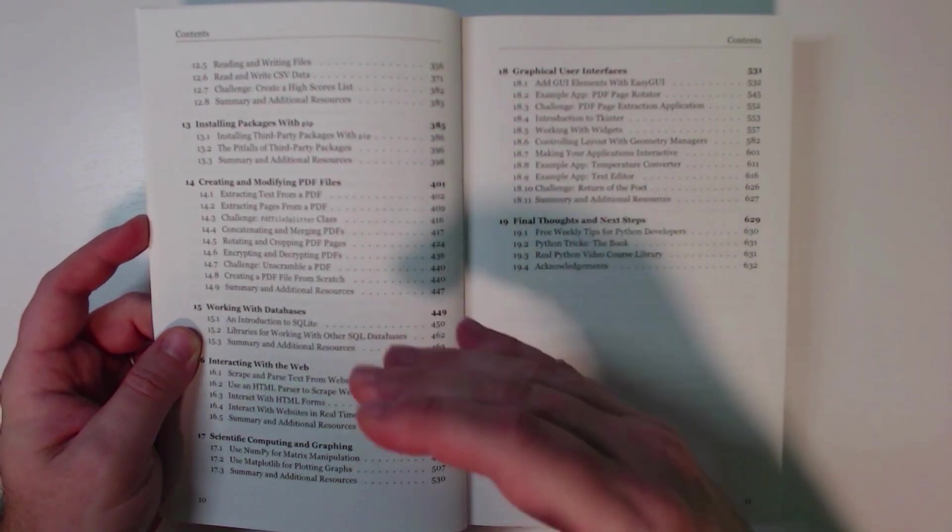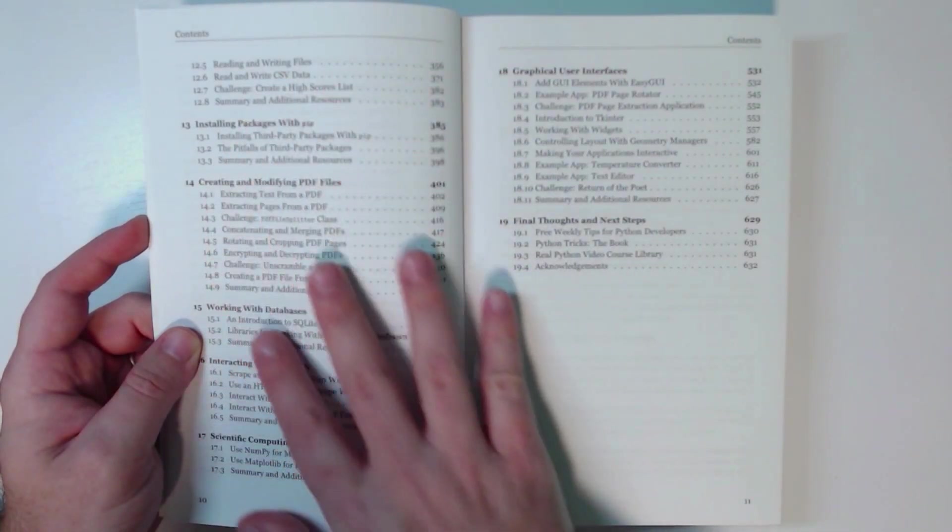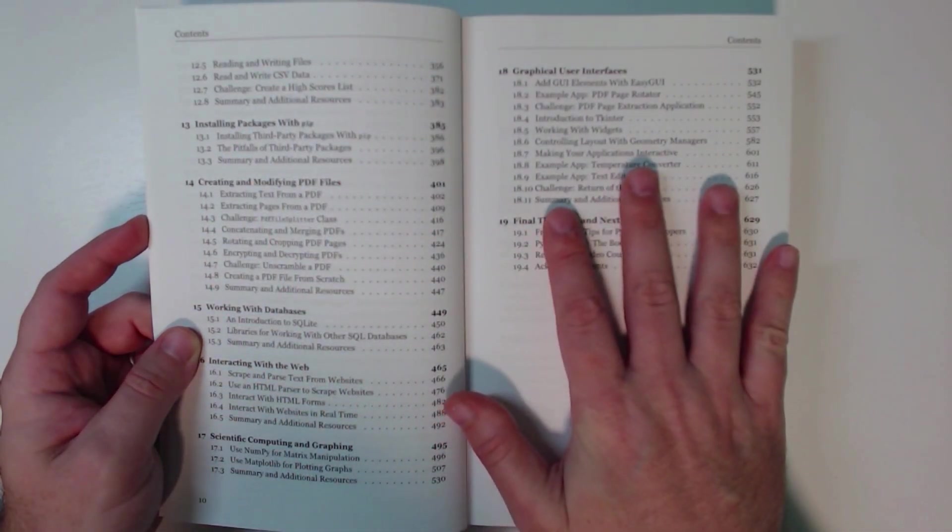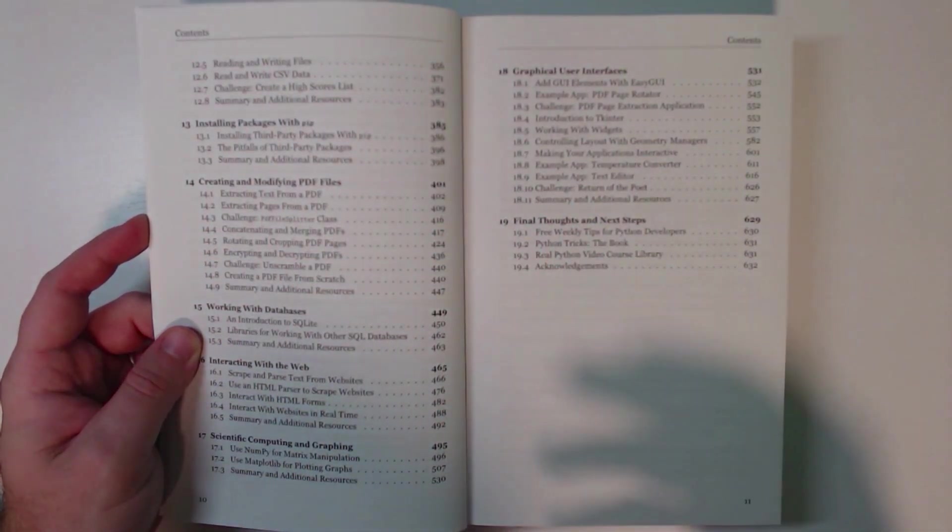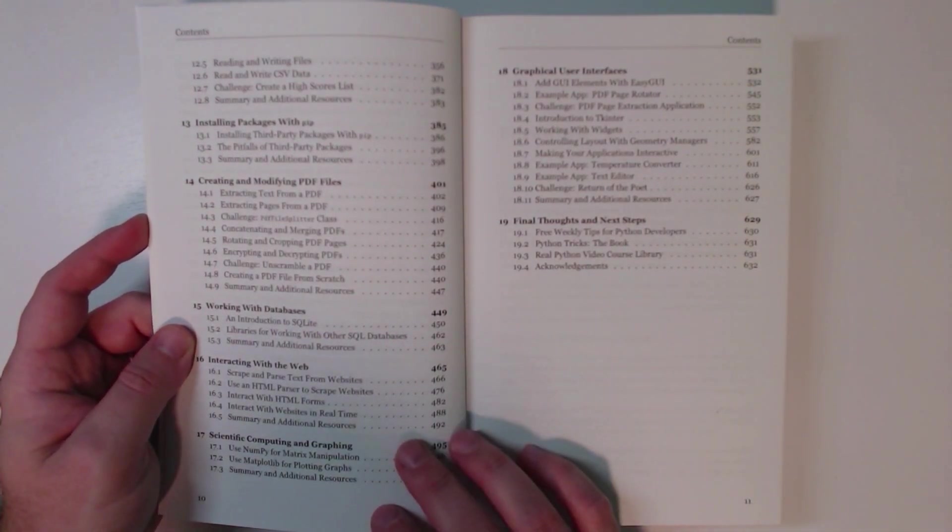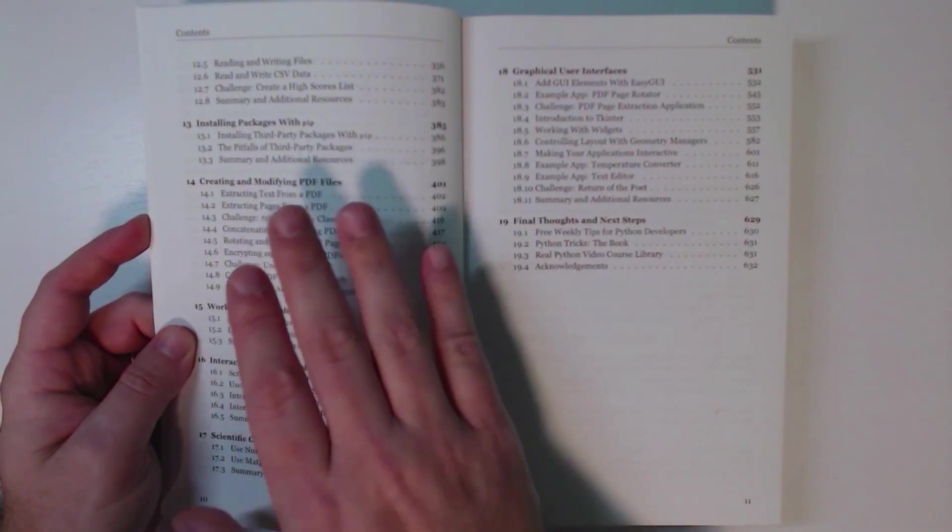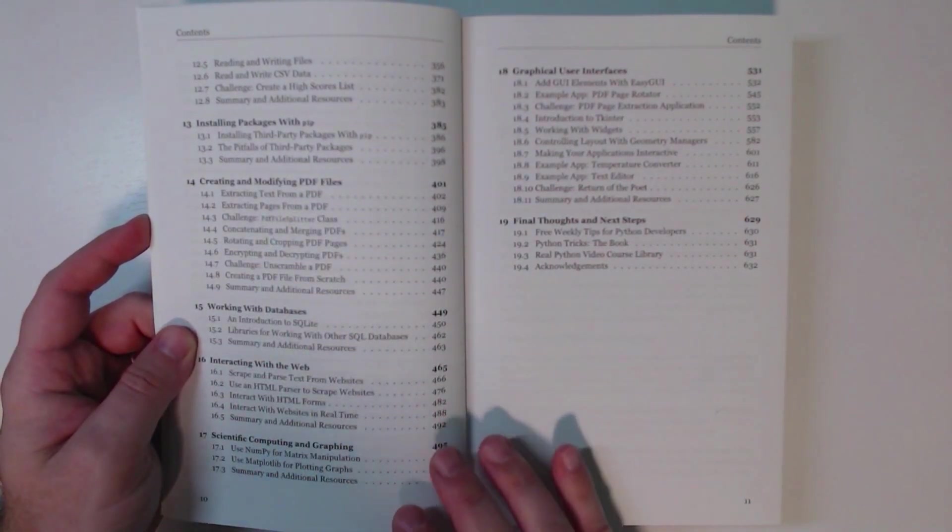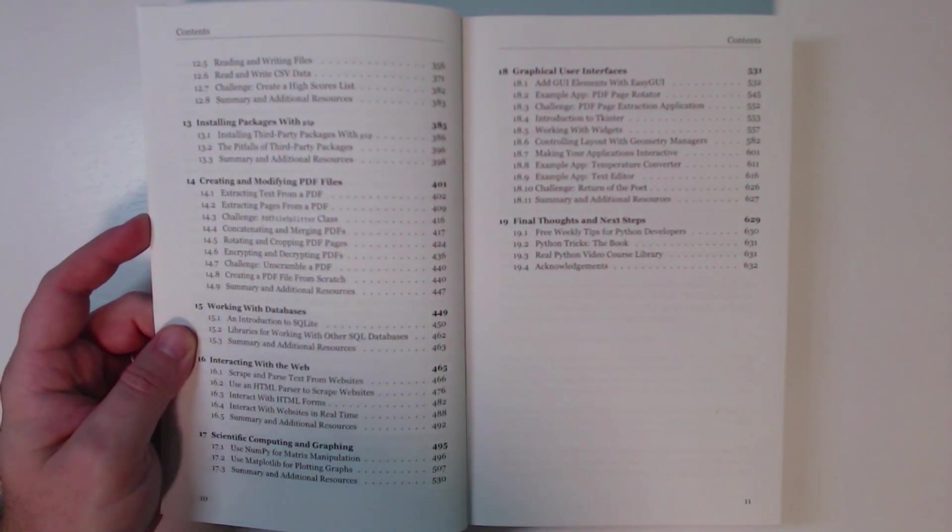But after learning about the language, the whole second half of the book is all about putting that into practice and seeing how to apply the things you've learned to some real-world applications. For example, we talk about how to create and modify PDF files, how to work with databases, how to interact with the web, like scraping and parsing text from websites, interacting with HTML forms, things like that.